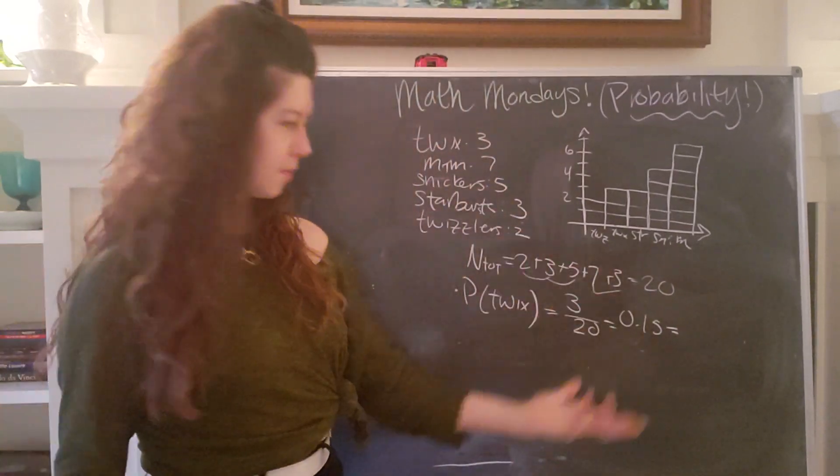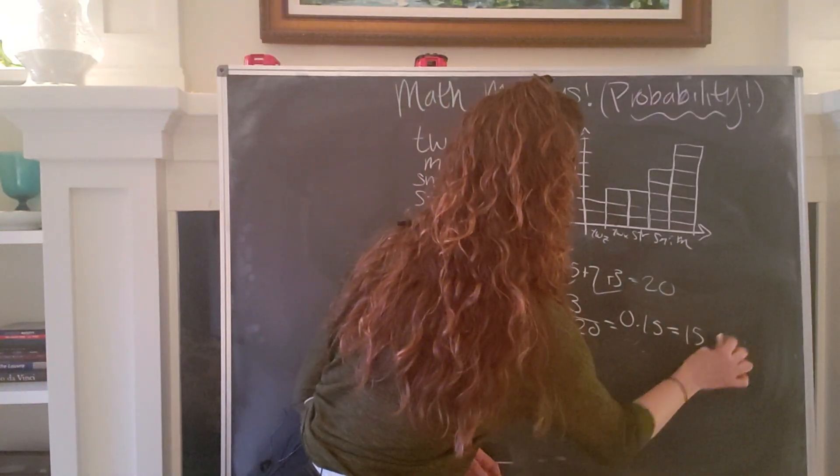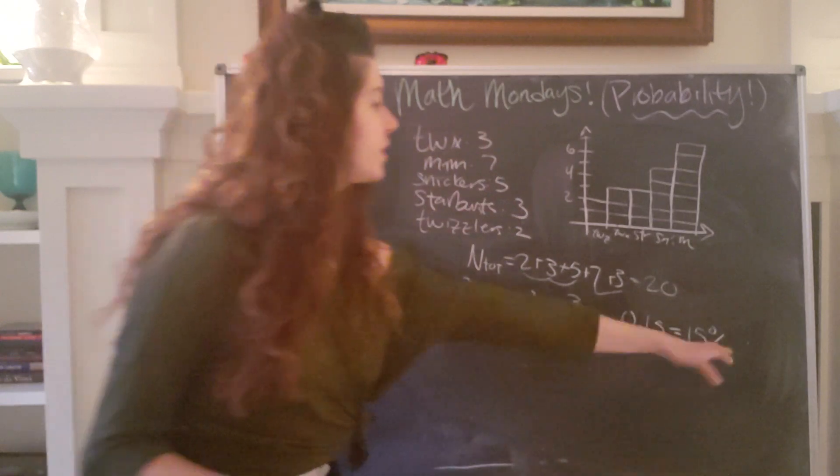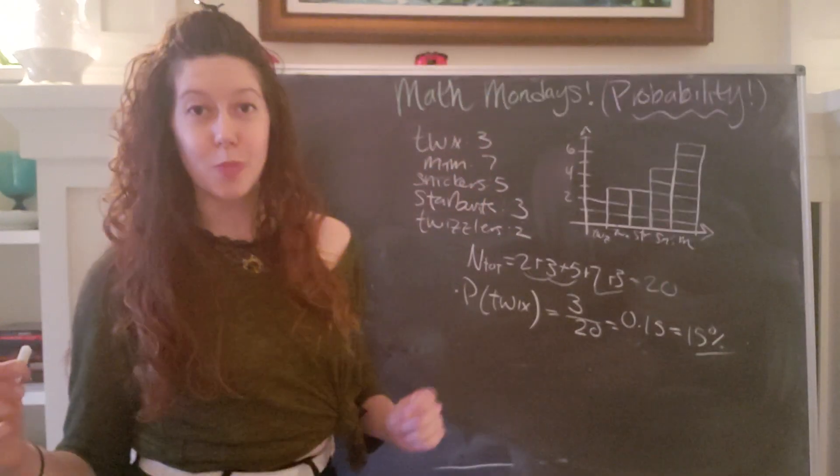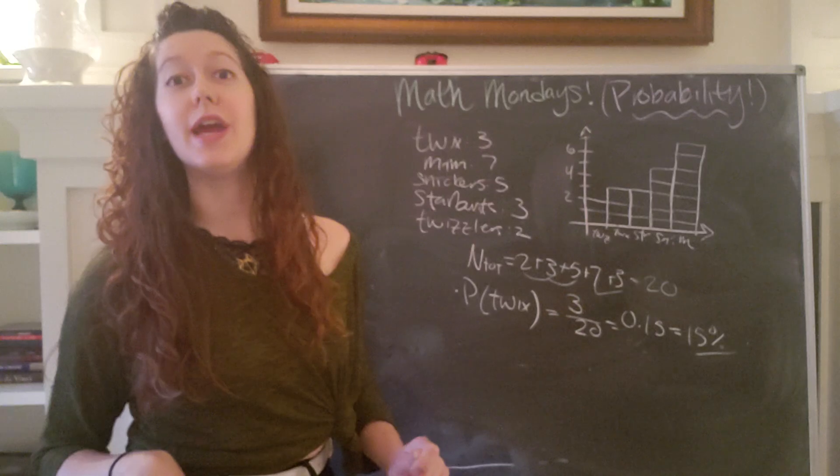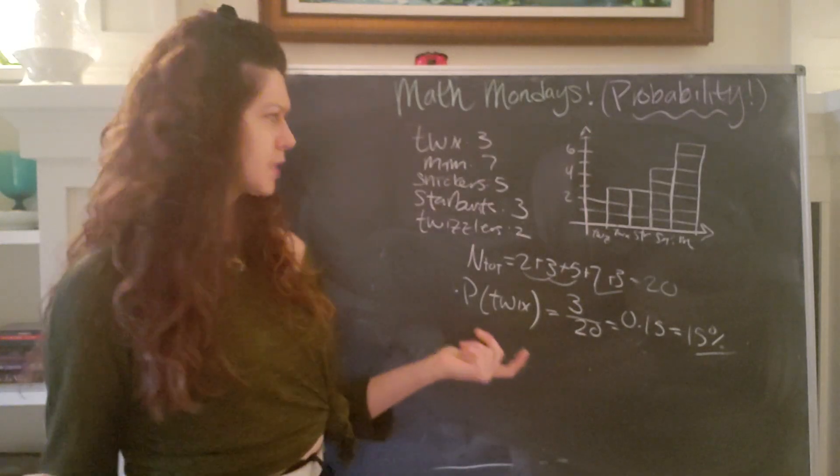Or if you're like me, I like to think of probabilities in terms of percentages. So it is a 15% chance that I will pull out a Twix from that bag of candy at random. Okay, that's pretty cool.